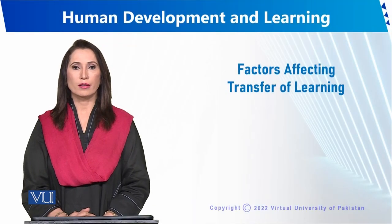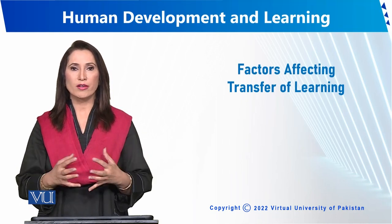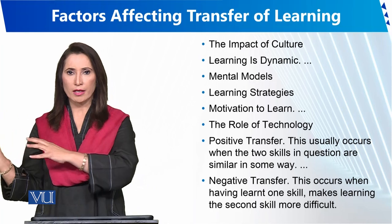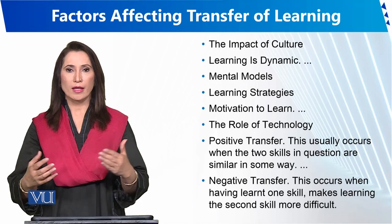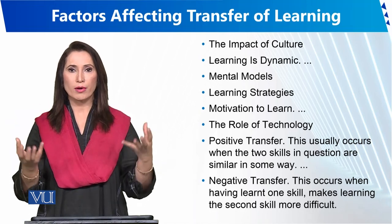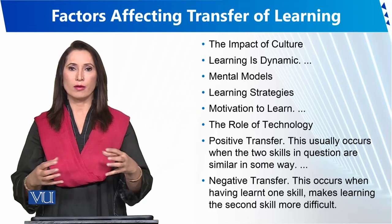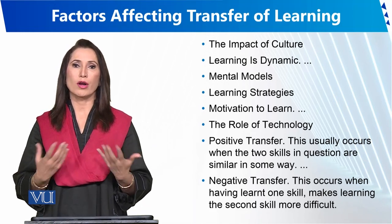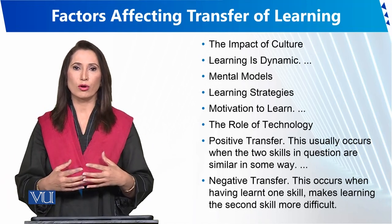Factors affecting transfer of learning — are they heredity factors or environmental factors? Transfer of learning basically means one learning is already stored in your mind, and then you are learning something new from another source. When you already have information about one topic, these two types of learning can create an interference — causing you to forget information or creating problems in transferring memory or learning.